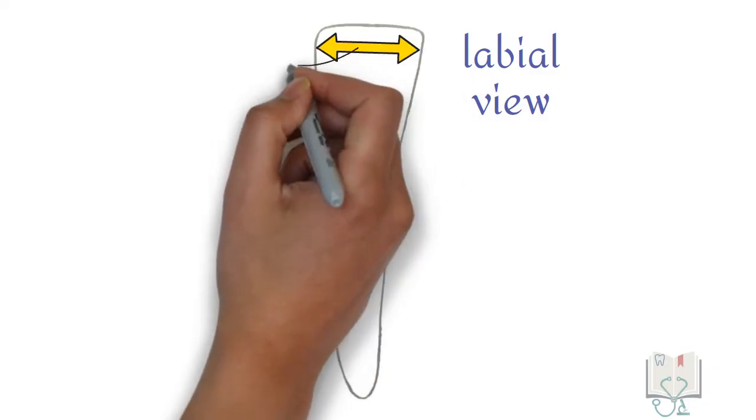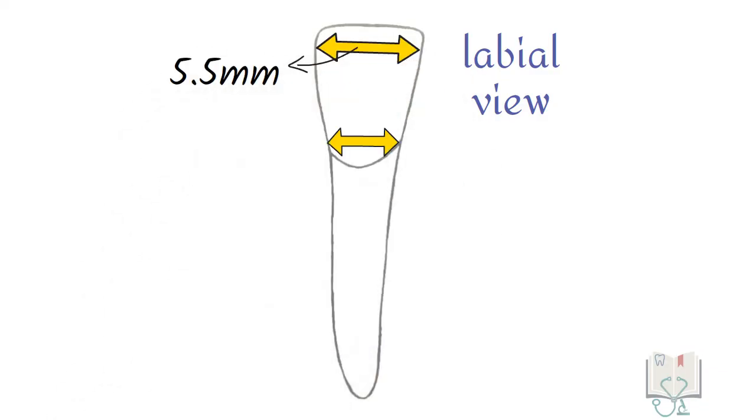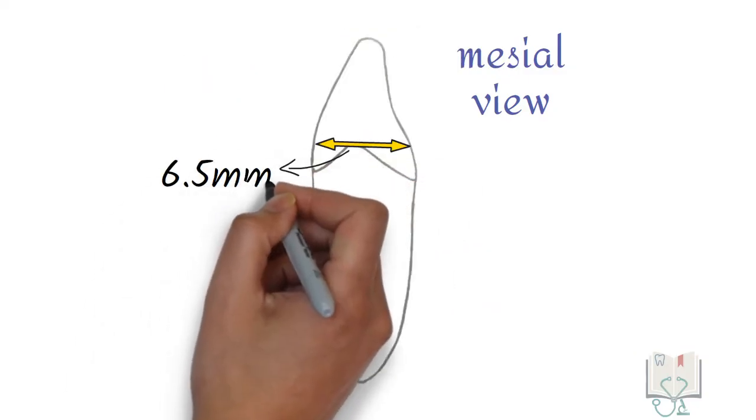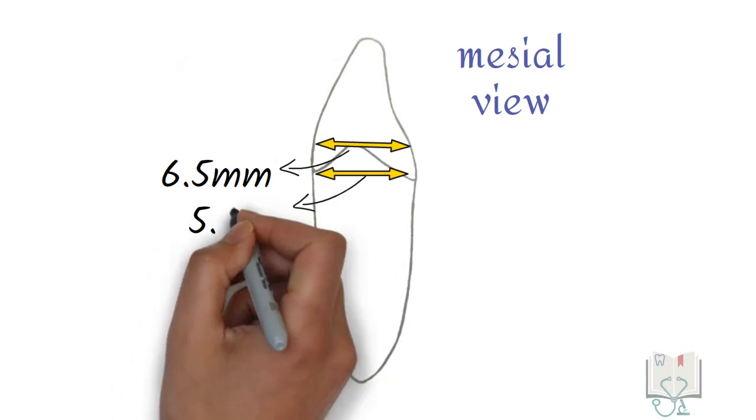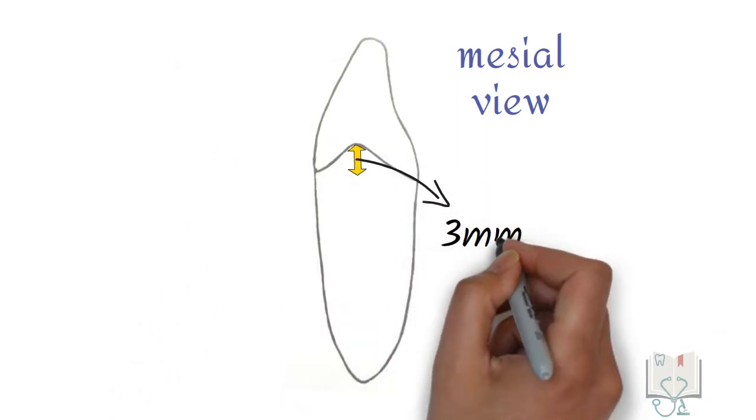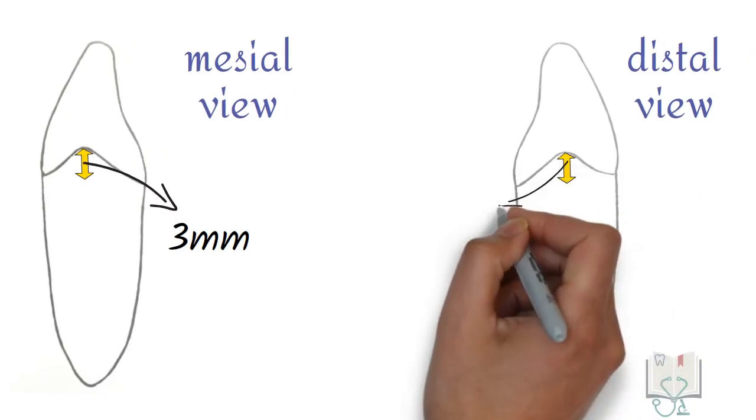The mesial distal diameter of the crown is 5.5 mm and at cervix it is 4 mm. The labial lingual dimension is 6.5 mm and at cervix it is 5.8 mm. The curvature of cervical line on mesial side is 3 mm and on distal side it is 2 mm.